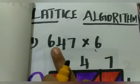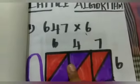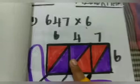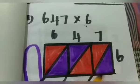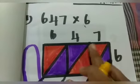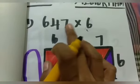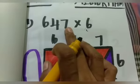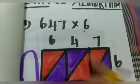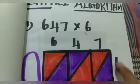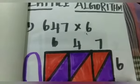First sum: 647 into 6. First, draw the box. Next, draw a line diagonally. 647 is a 3-digit number, so draw 3 columns. 6 is a 1-digit number, so draw 1 row.